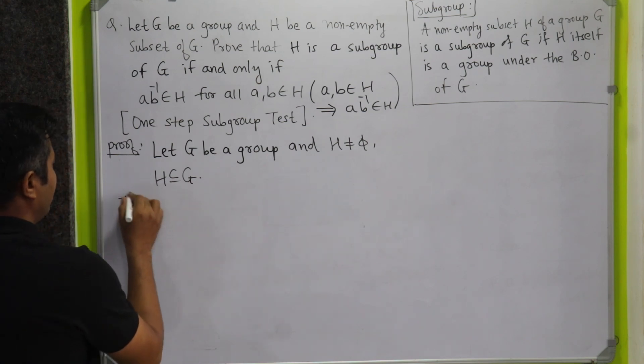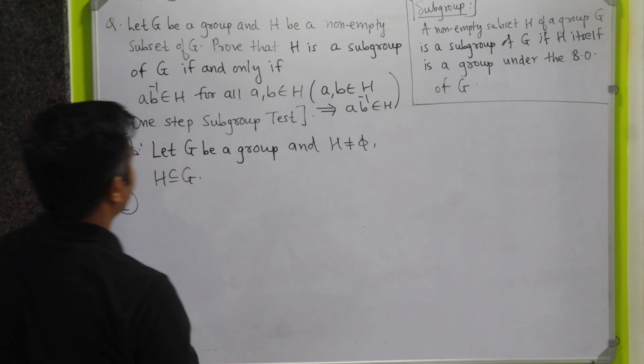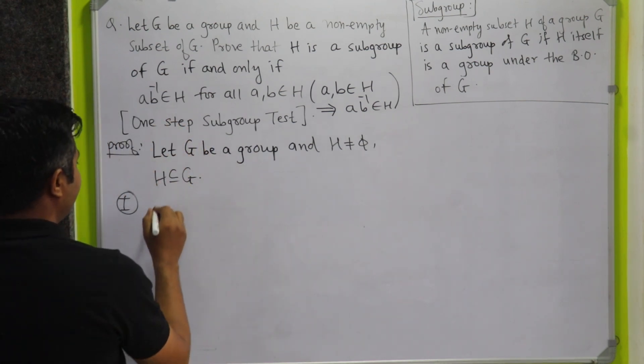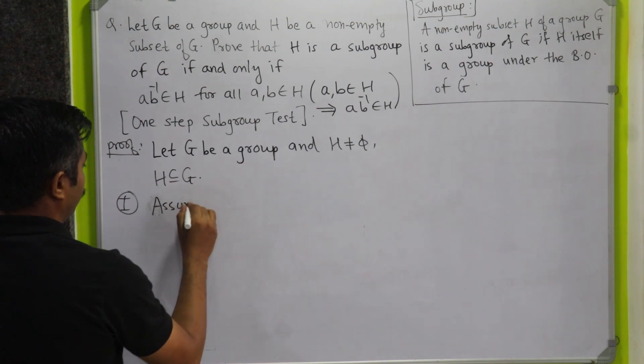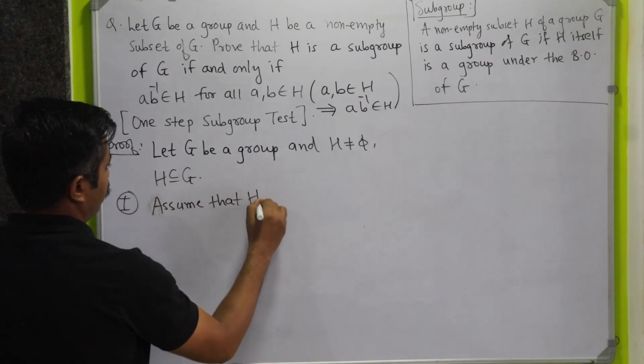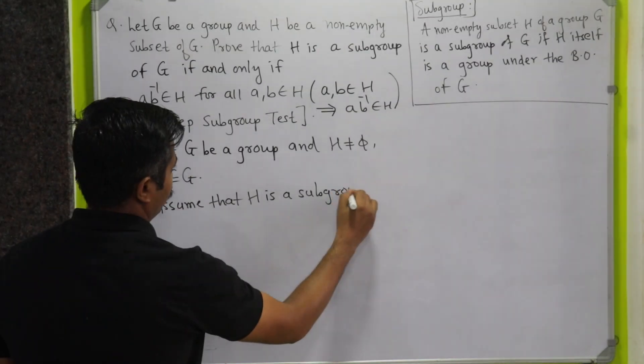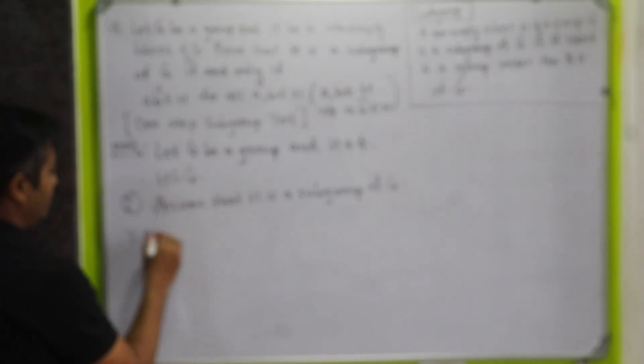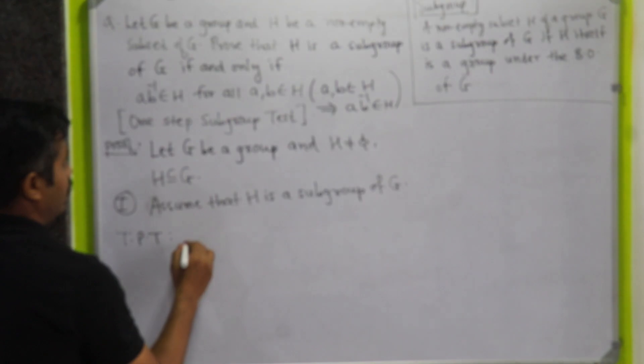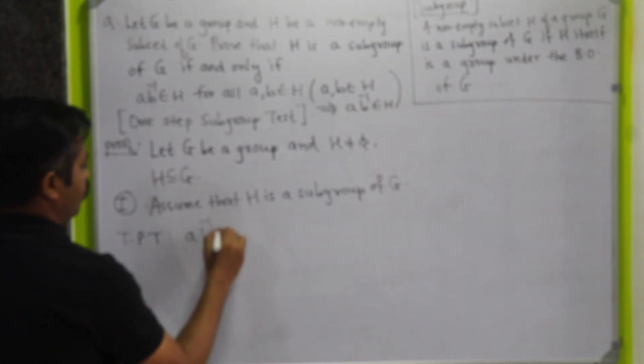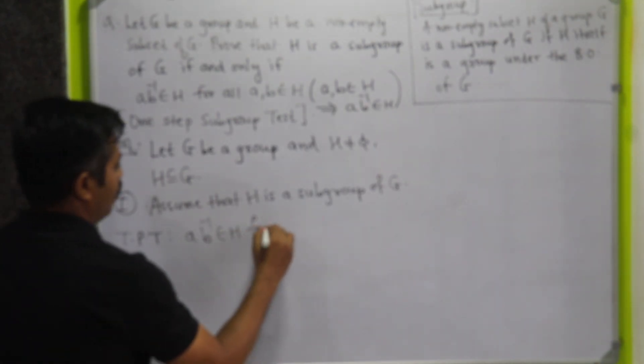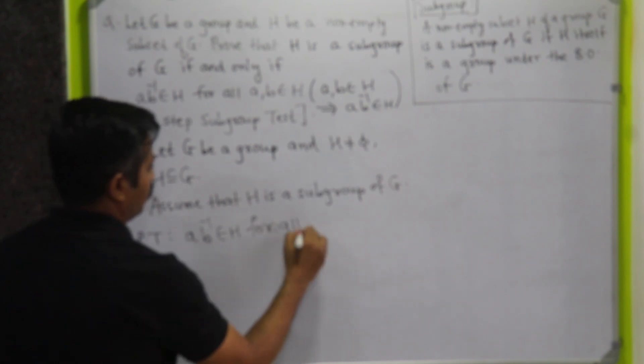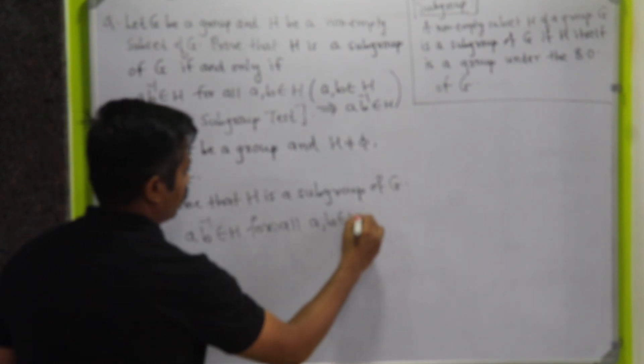In part 1, we will assume that H is a subgroup of G, and using this we are going to prove that AB inverse belongs to H for all A, B belongs to H.